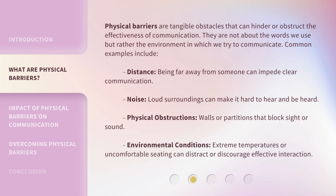Physical barriers are tangible obstacles that can hinder or obstruct the effectiveness of communication. They are not about the words we use, but rather the environment in which we try to communicate. Common examples include: Distance — being far away from someone can impede clear communication. Noise — loud surroundings can make it hard to hear and be heard. Physical obstructions — walls or partitions that block sight or sound. Environmental conditions — extreme temperatures or uncomfortable seating can distract or discourage effective interaction.